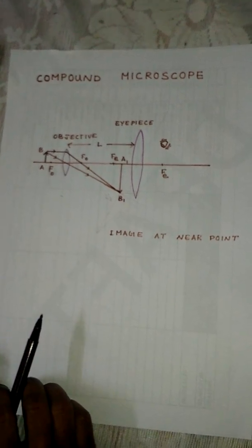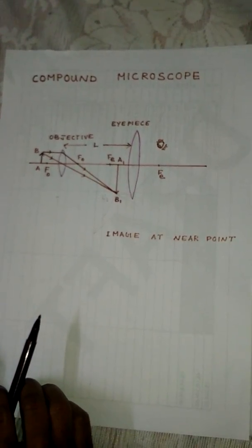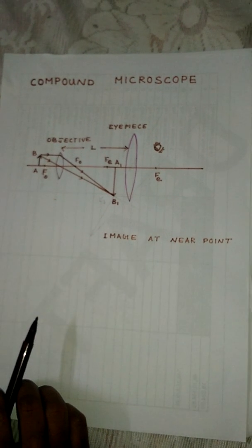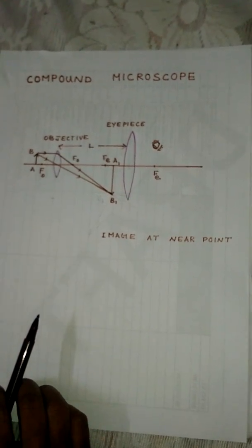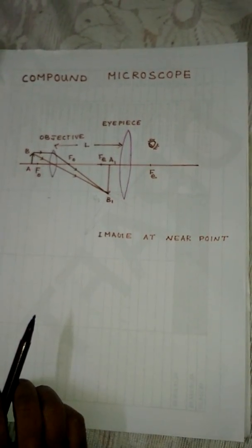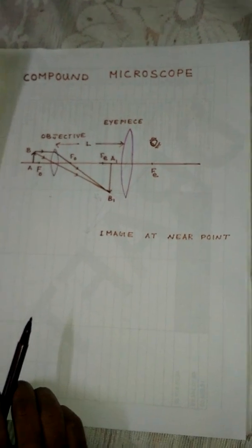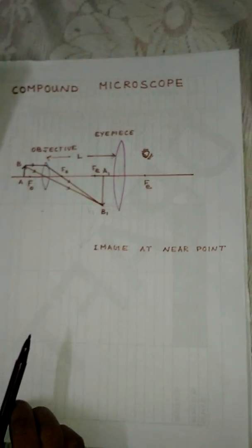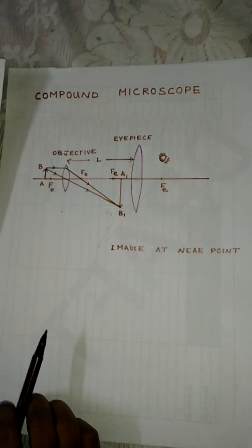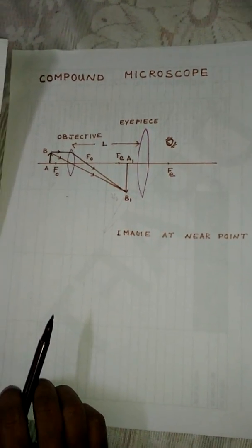Today let us learn about the compound microscope. A simple microscope has limited magnification, less than 10. For much larger magnifications, one uses two lenses. This is known as a compound microscope.